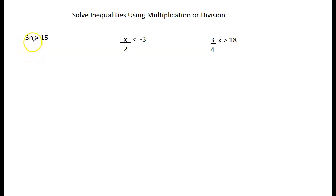You notice 3 has been multiplied times the n, so the opposite of multiply by 3 is to divide by 3. I divide both sides by 3, and I get n greater than or equal to 15 divided by 3 is 5.